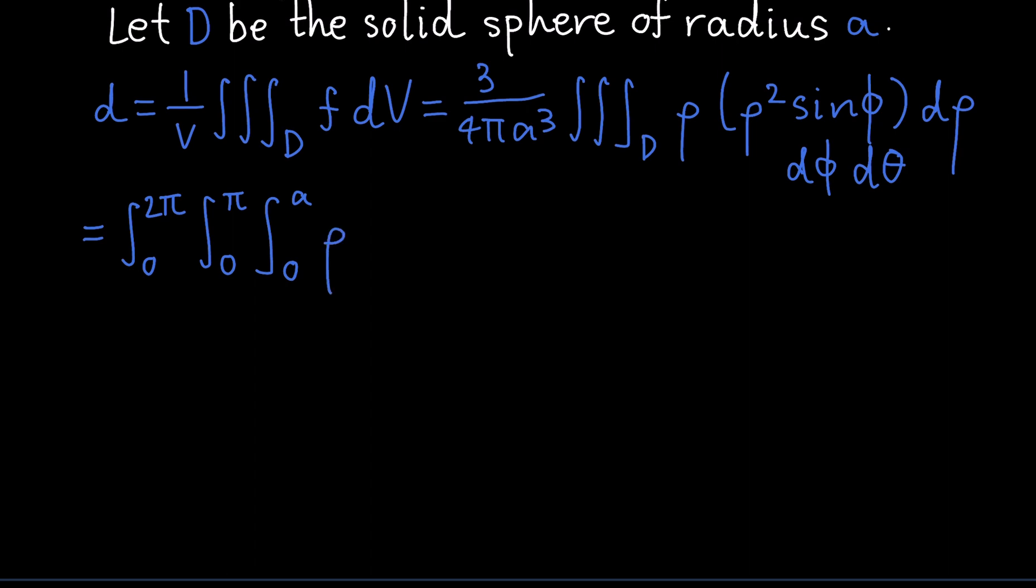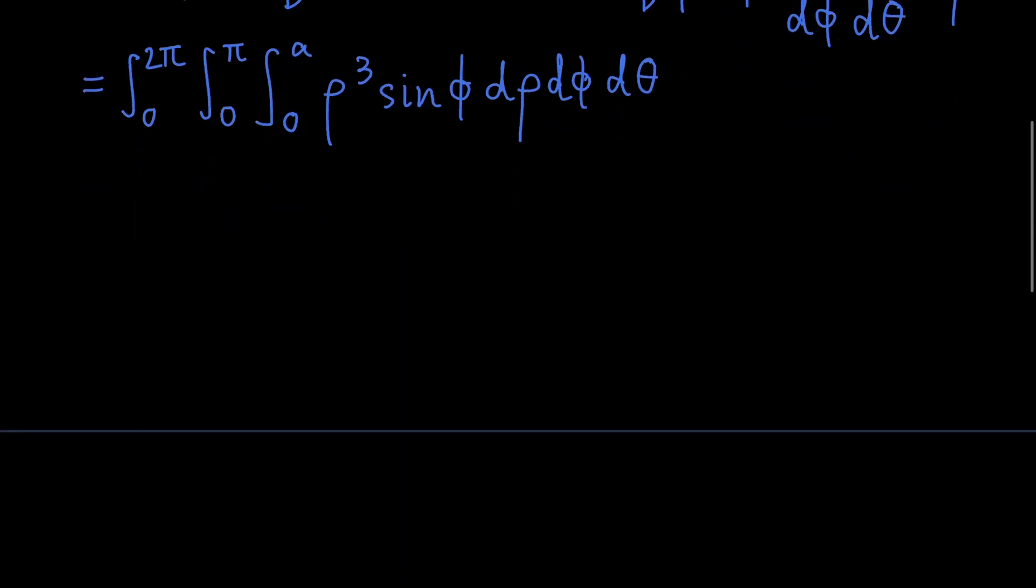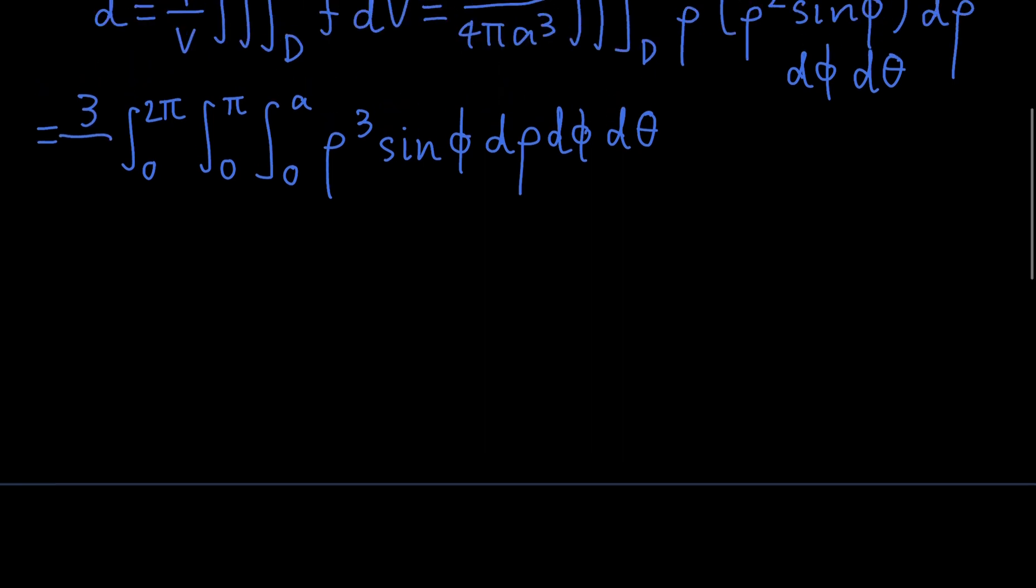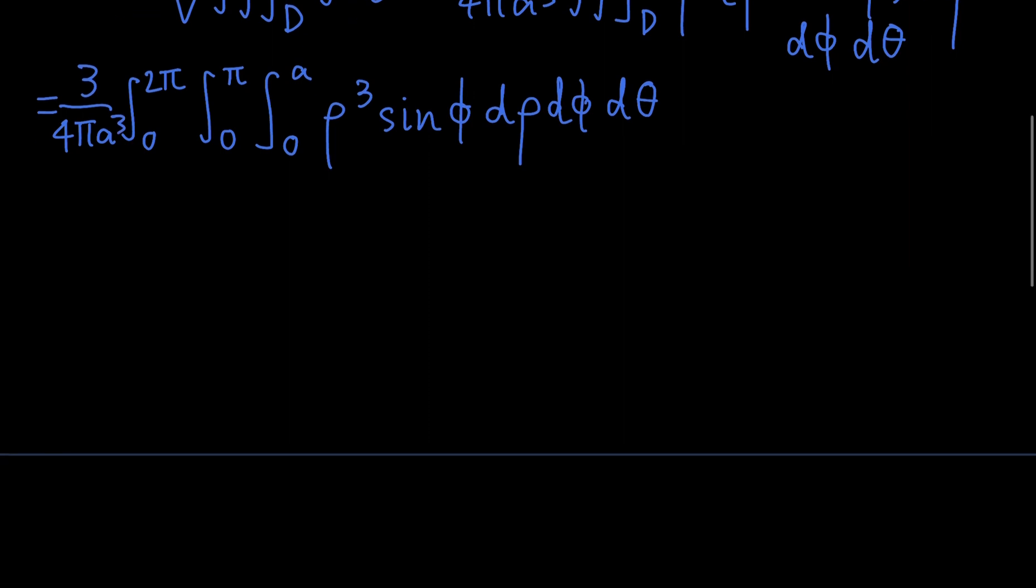And we have, inside the integral, rho cubed, combining these two terms, and sine phi, d-rho, d-phi, d-theta. Sorry, my handwriting is getting a bit bad. And don't forget to put the 1 over V over here. Now, what do we have here? Well, we can just calculate this integral. It's just a normal iterated integral that we can calculate using brute force.